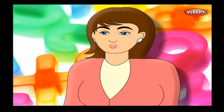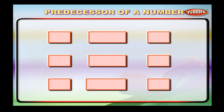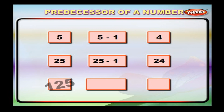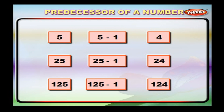The number that comes just before a particular number is called its predecessor. In numerical order, the predecessor of a number is one less than the number. The predecessor of five is four. The predecessor of one hundred and twenty-five is one hundred and twenty-four.